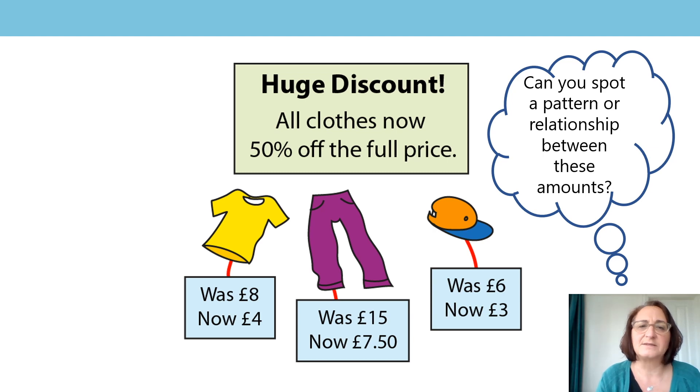I noticed that in the boxes underneath the item of clothing there are two amounts. So here if we look at the t-shirt the top amount is £8 that is 100% of the amount. The amount underneath is £4. How would £4 relate to £8? £4 is half of £8 or 50% of this amount.